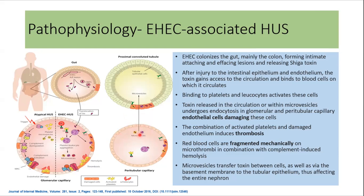When there is thrombus in the glomerular capillary, red cells are mechanically fragmented on the microthrombi, in combination with complement-induced hemolysis, leading to anemia. Moreover, microvesicles transfer the toxin between cells as well as via the basement membrane to the tubular epithelium, thus affecting the entire nephron. This is the mechanism of enterohemorrhagic E. coli-associated HUS.